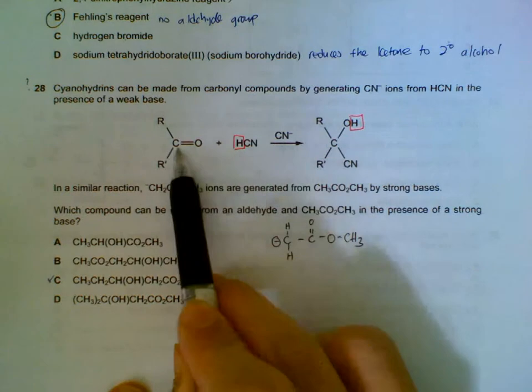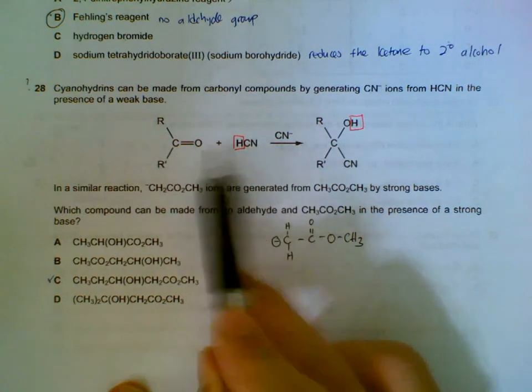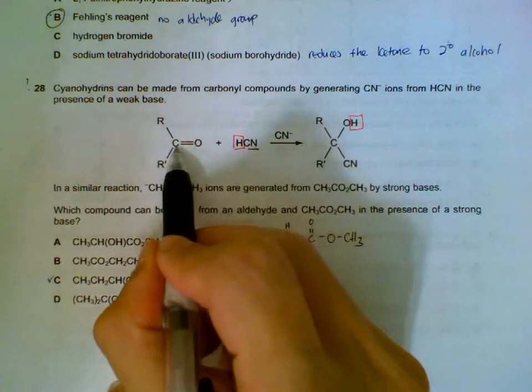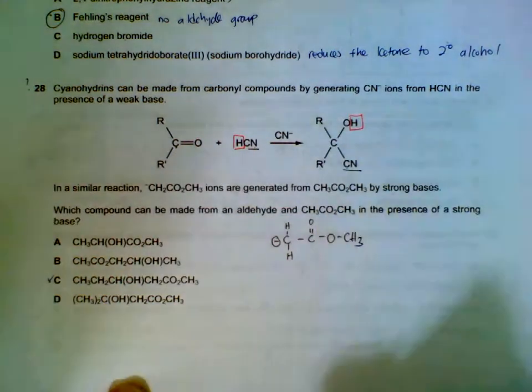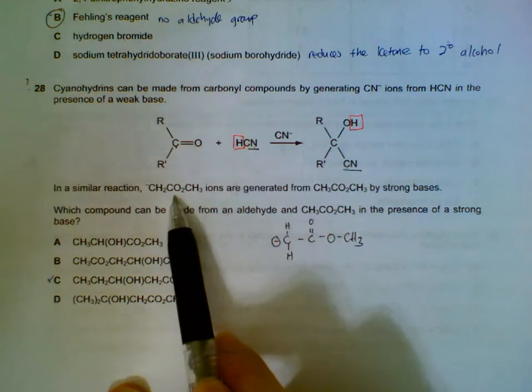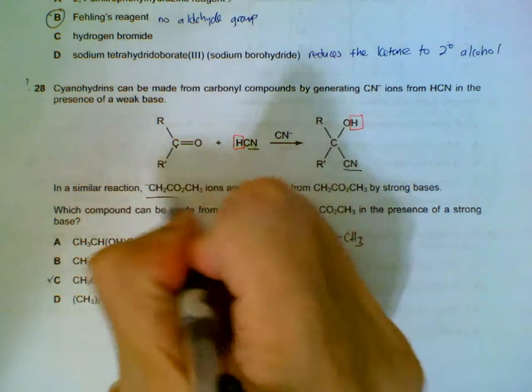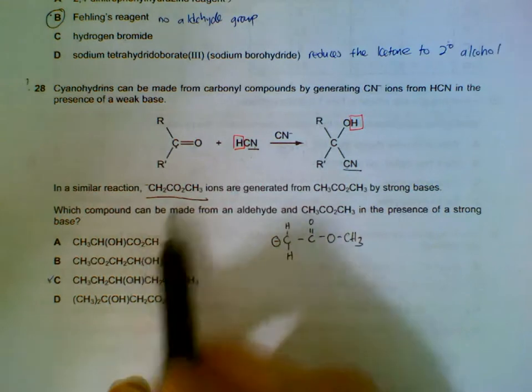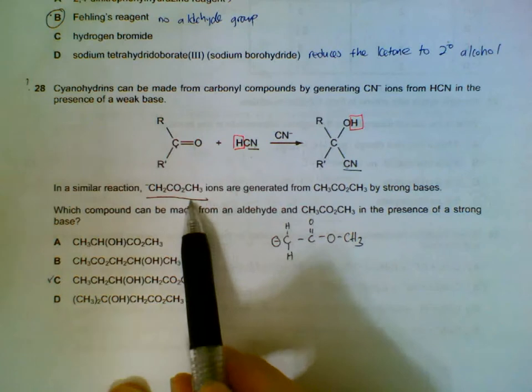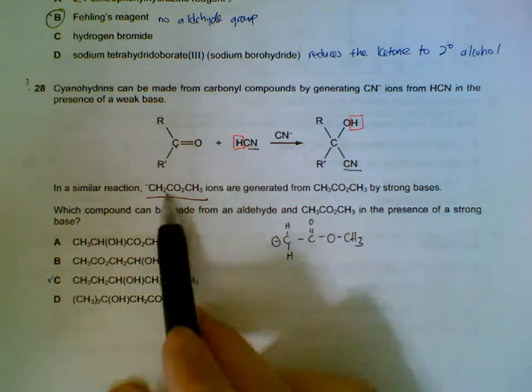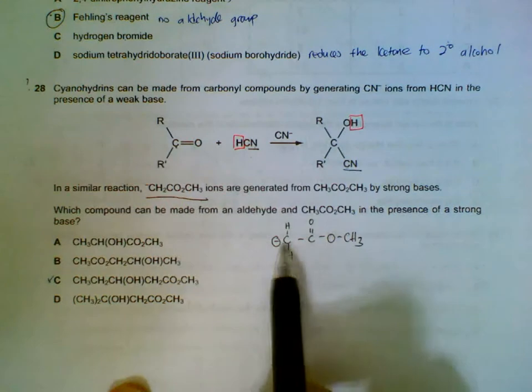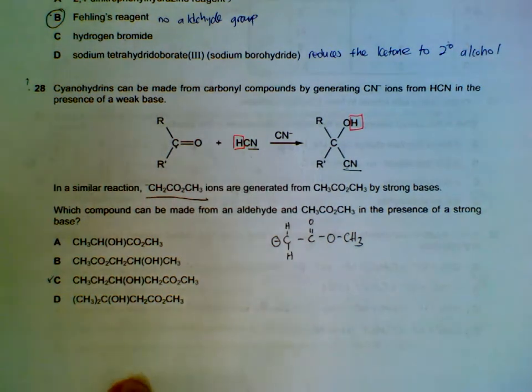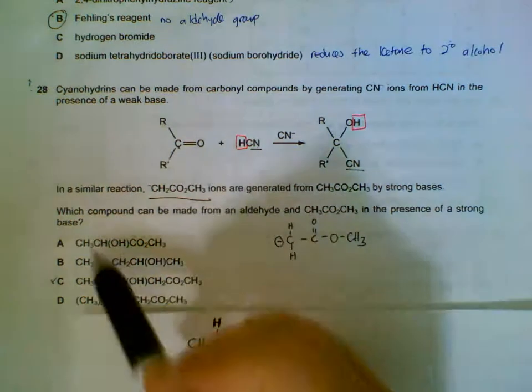Number 28: we are given an example of hydrogen cyanide adding onto a carbonyl group. One of the H goes to here, and the CN very importantly joins to the carbon holding the O. We are given another reaction to consider - we have this negative ion which is equivalent to the CN here. Which one of the following can be formed from an aldehyde and this ion? This ion, if I were to draw it out, will look like this: negative charge on this side, CH₂COOCH₃. I'll draw the four options here for easy comparison.